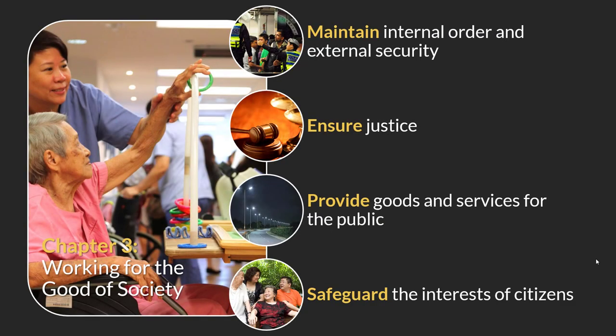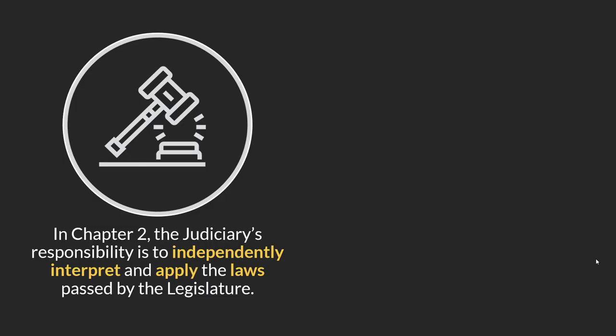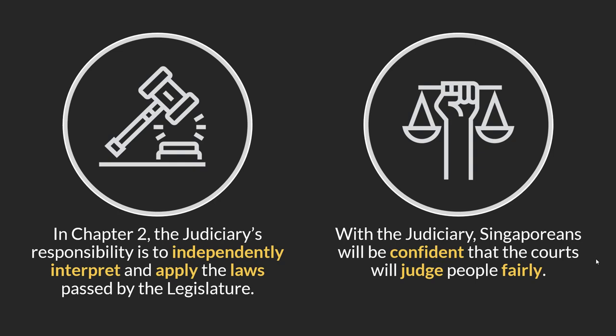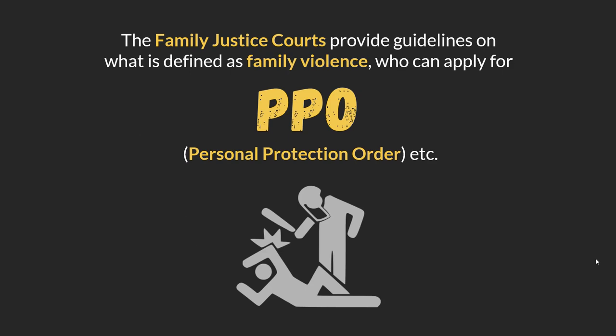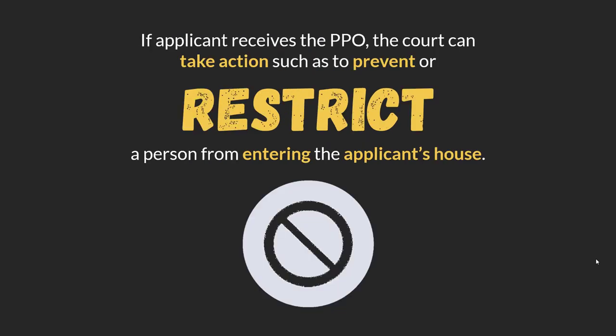The next role of government is to ensure justice. The judiciary's responsibility is to independently interpret and apply the law passed by the legislature, judging cases fairly and equally for every citizen. With the judiciary, Singaporeans can be confident they will be judged fairly. There are various courts, such as the Family Justice Court, which provides guidelines on family violence and applies Personal Protection Orders (PPOs) in domestic violence cases. If an applicant receives a PPO, the court can prevent or restrict a person from entering the applicant's home or coming into close contact with the victim.